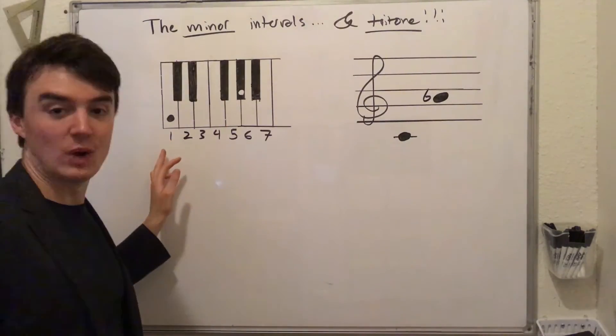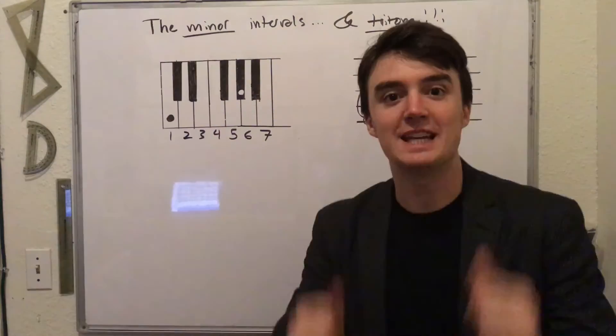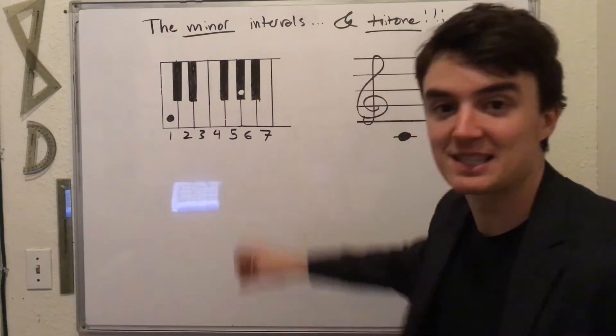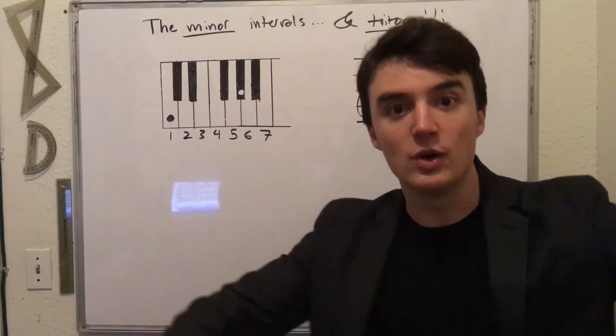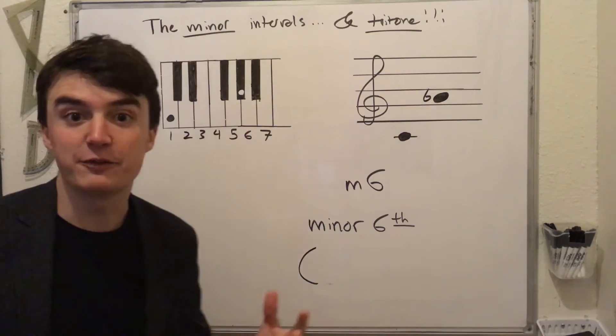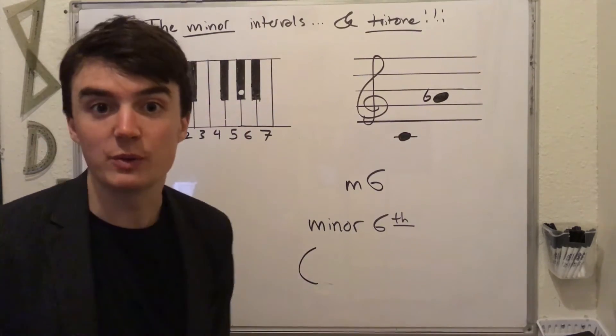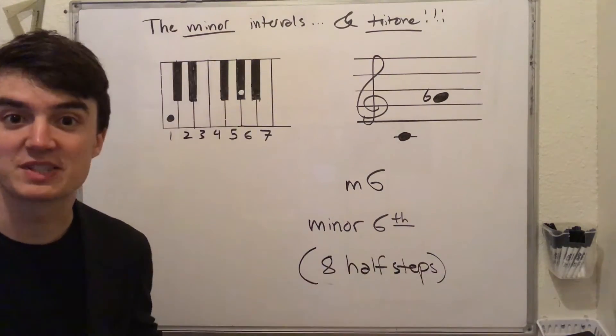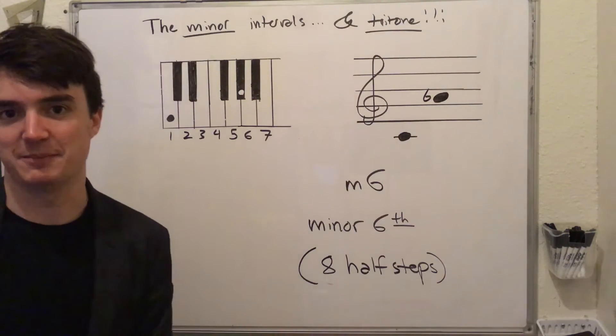So let's say we're going from one to a flat sixth in a major scale. One to six is a major sixth. And we know that a flat major makes it minor. This is a minor sixth. And if we were to count the half steps, we would have eight half steps. A minor sixth is always eight half steps.